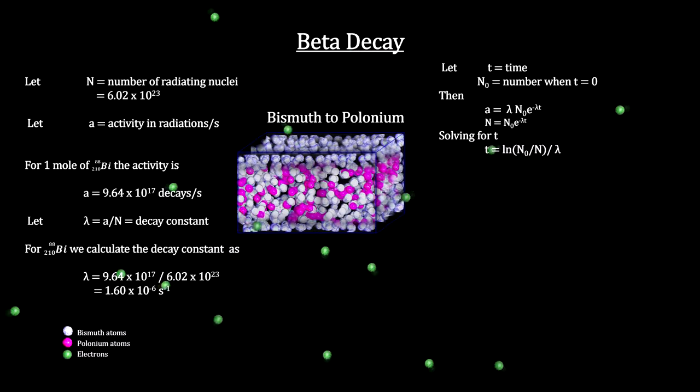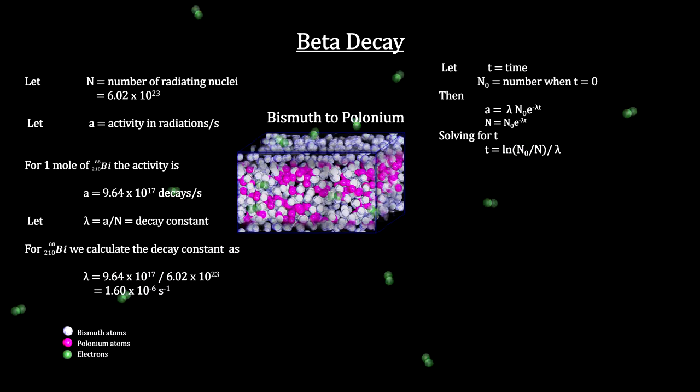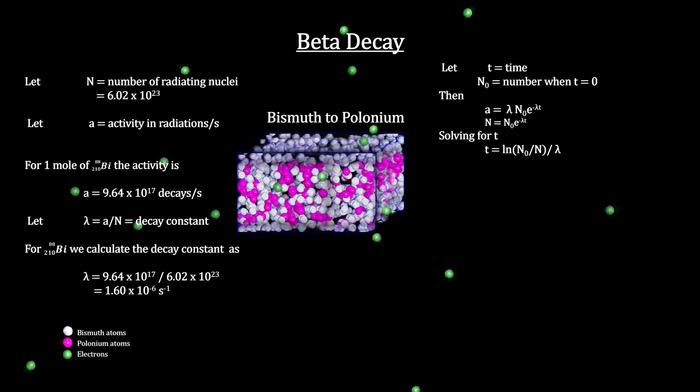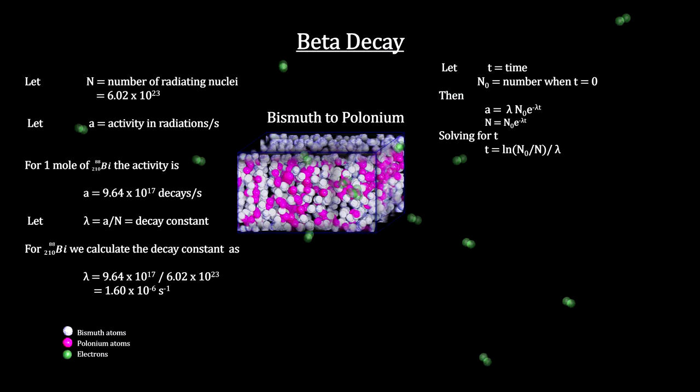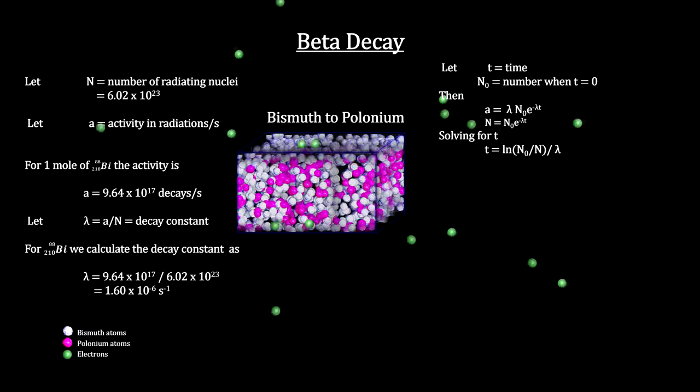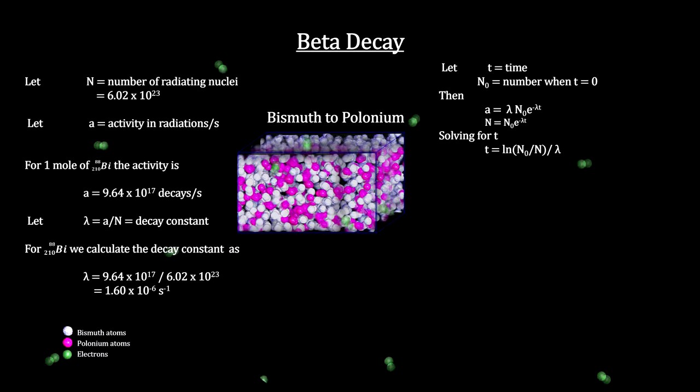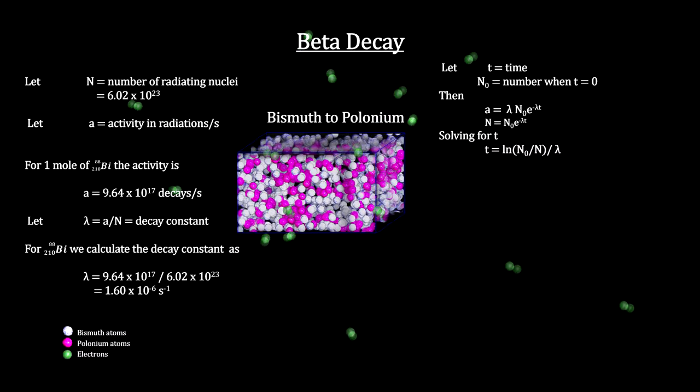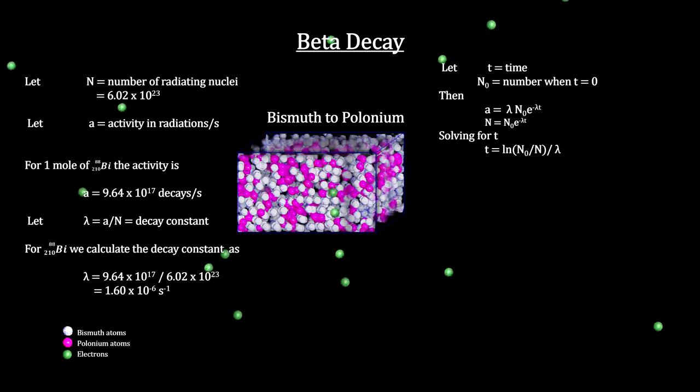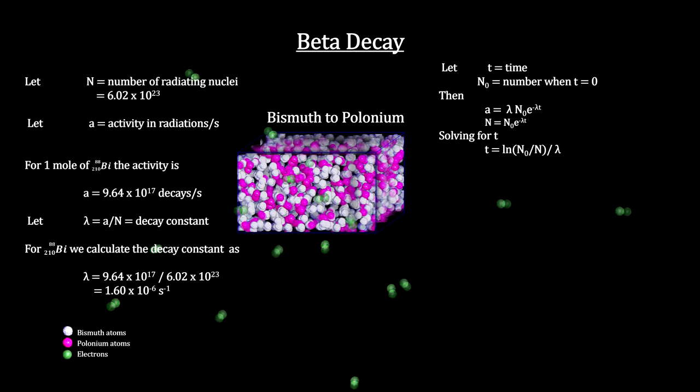Both the activity rate and the number of radioactive nuclei vary over time. As a sample decays, the number of radioactive nuclei decreases. With fewer radioactive nuclei, the activity rate also decreases. From this, we get the exponential law of radioactive decay. It tells us how the number of radioactive nuclei in a sample decreases with time.